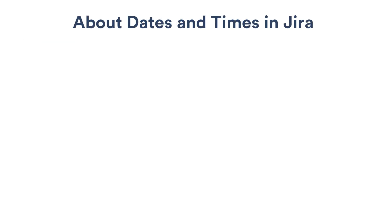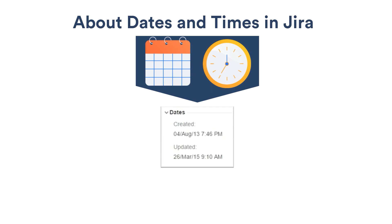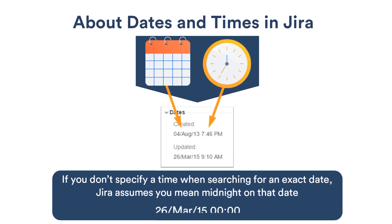One thing to understand about dates in Jira is that the date also includes a time. If you don't specify a time when searching for an exact date, Jira assumes you mean midnight on that date. This is an important concept that will come up later when we look at how to search for issues based on an exact date.